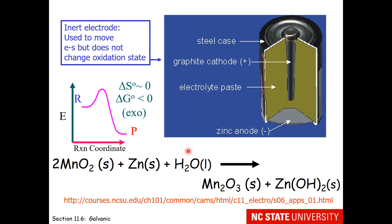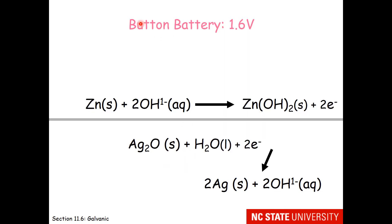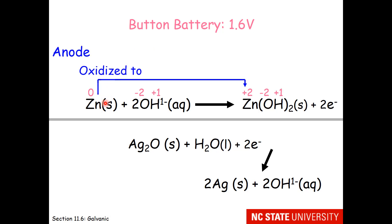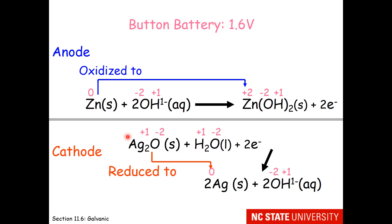This might explain why batteries are somewhat hot when they operate. Another classic type of battery is the button battery — these would be in your watches. It uses the same anode technology: zinc solid is oxidized to zinc 2+. But the cathode technology involves silver, where silver ion is reduced from plus one to zero. Silver is more expensive than manganese, which explains why button batteries tend to be rather expensive.